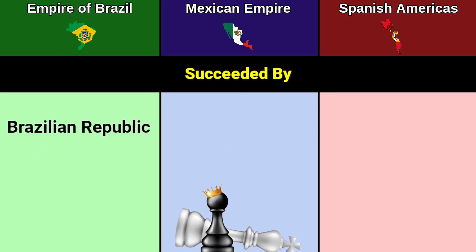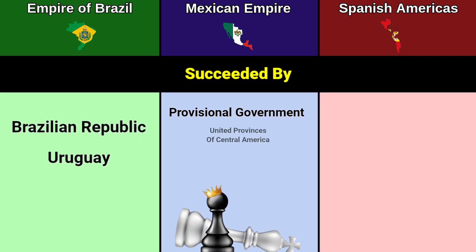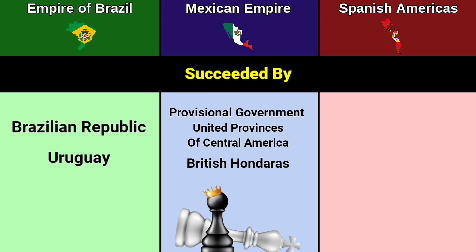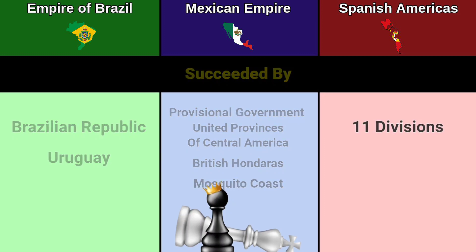Succeeded by: Brazilian Republic, Uruguay Provisional Government, United Provinces of Central America, British Honduras, Mosquito Coast, 11 divisions.